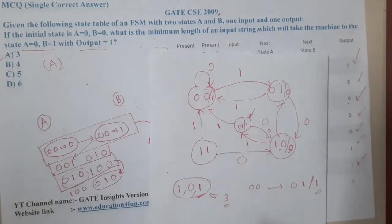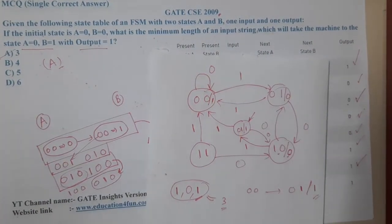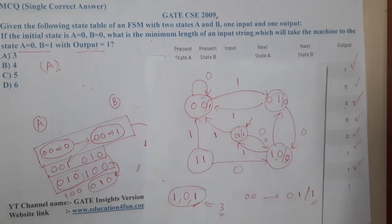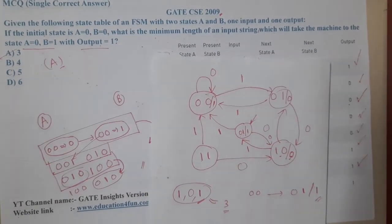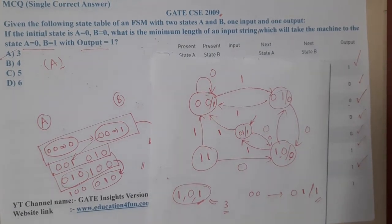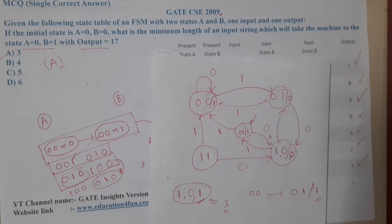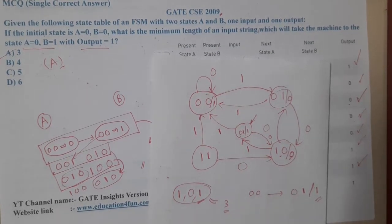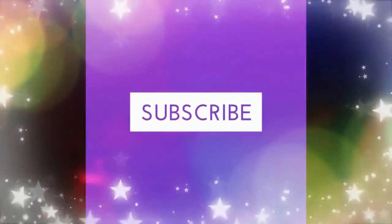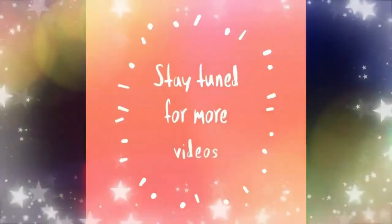The answer is 3, which corresponds to option A. It's a fairly straightforward question, but drawing the diagram carefully is really important. Avoid trying to solve it directly by just observing the table — that is quite complex. I hope everyone got a clear idea. In the next lecture, we'll continue with the next question. Thank you, like, share, and subscribe!